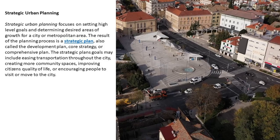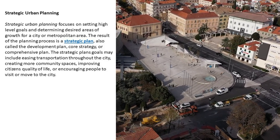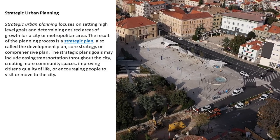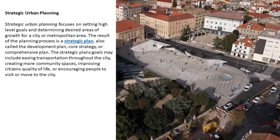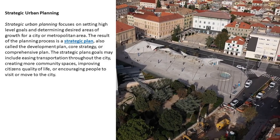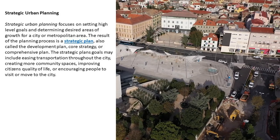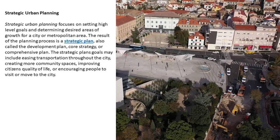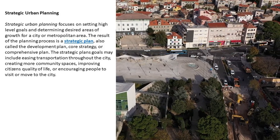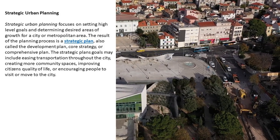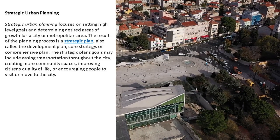Strategic urban planning focuses on setting high-level goals and determining desired areas of growth for a city or metropolitan area. The result of the planning process is a strategic plan, also called the development plan, core strategy, or comprehensive plan. The strategic plan's goals may include easing transportation throughout the city, creating more community spaces, improving citizens' quality of life, or encouraging people to visit or move to the city.